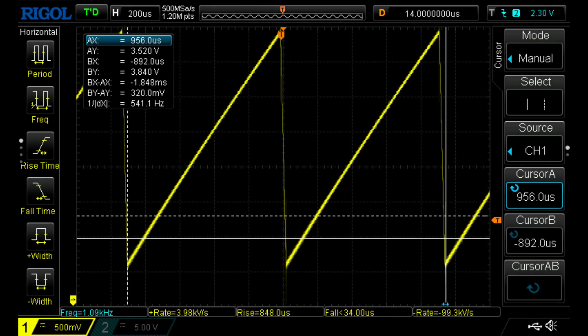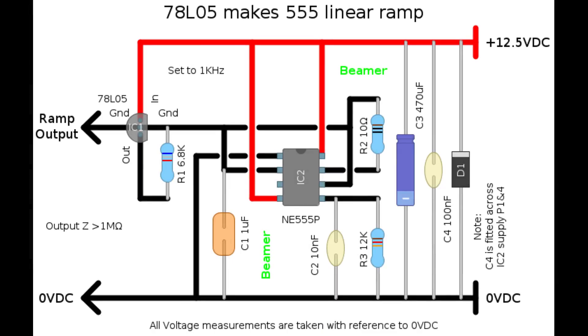I've just presented this scope pick to remind us what a linear ramp waveform should look like. So what are the limitations of this circuit?